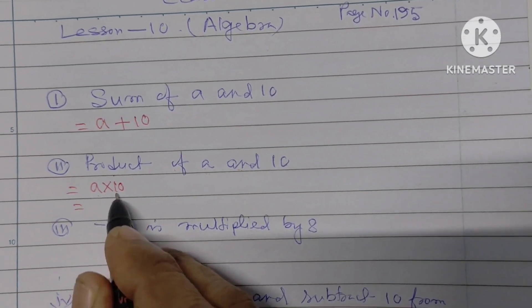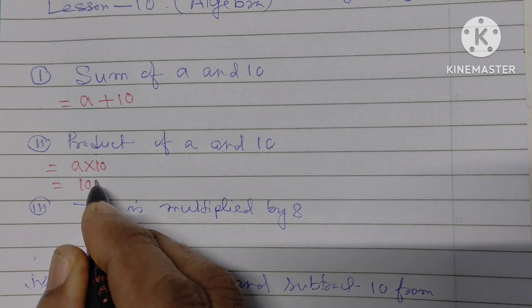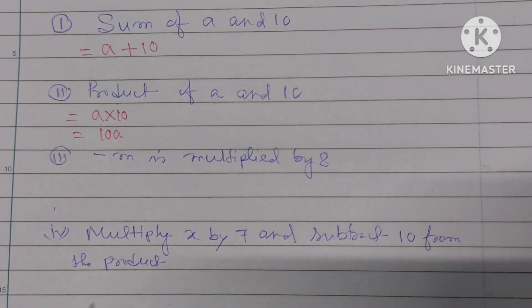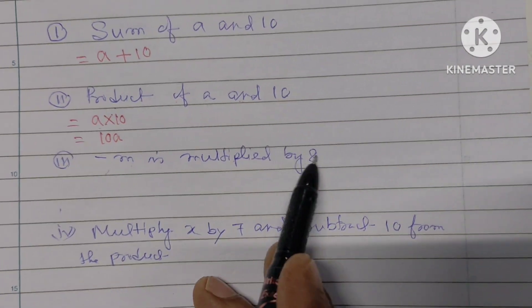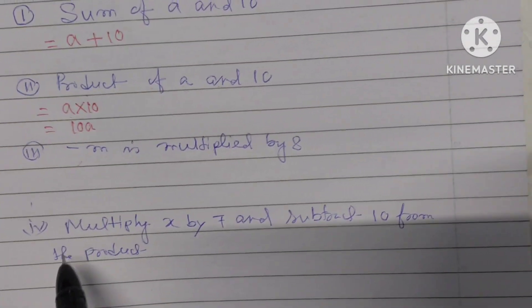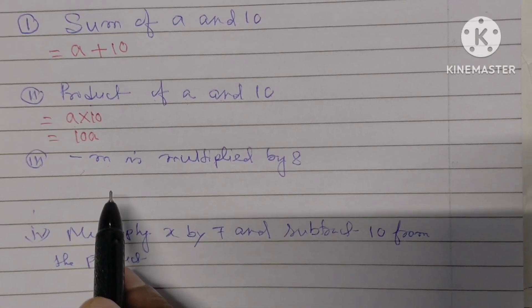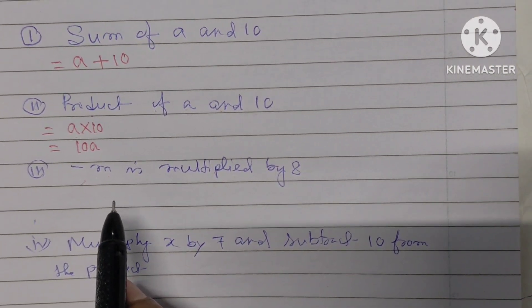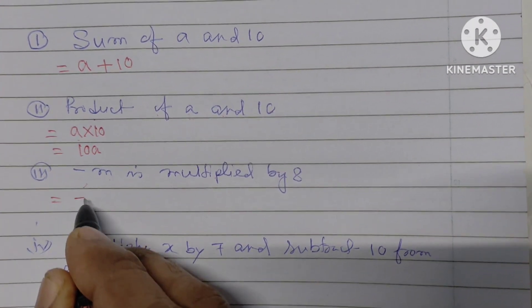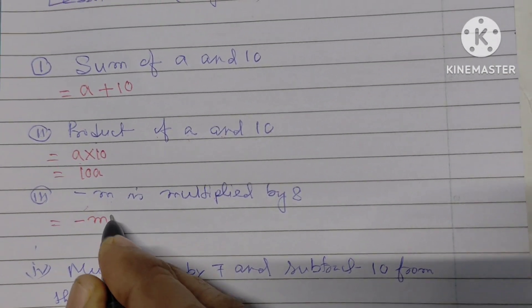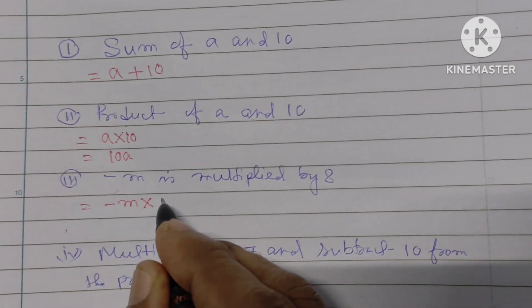Next one: minus m is multiplied by 8. We have to write minus m multiplied by 8.